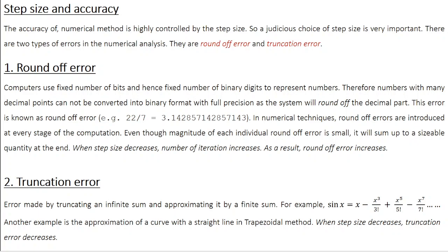Round-off error is encountered in pretty much every computation. In numerical techniques, round-off errors are introduced at every stage of the computation. Even though the magnitude of each individual round-off error is small, it will sum up to a sizable quantity at the end. Round-off error depends on the number of iterations — more iterations means more round-off error. And when step size decreases, the number of iterations increases, so as a result, round-off error increases.